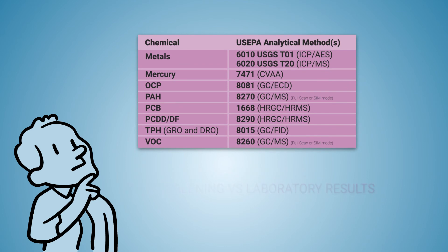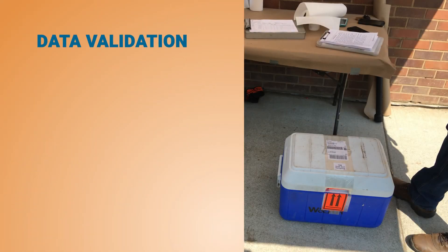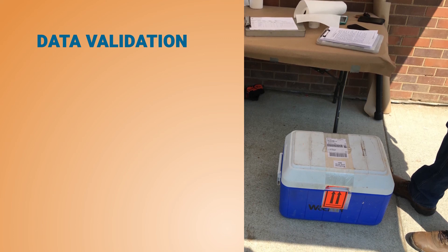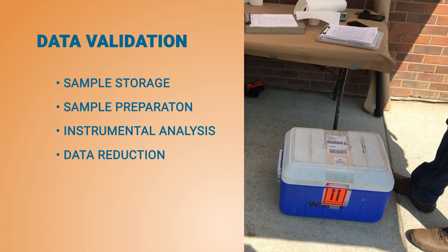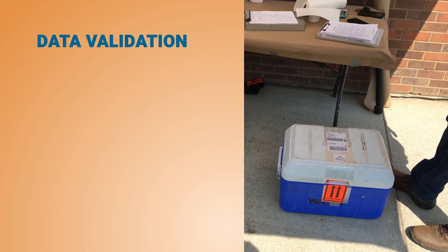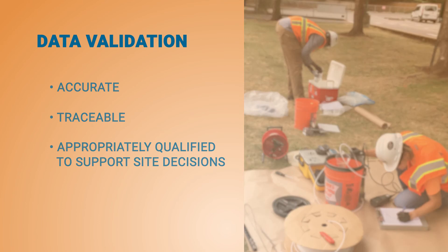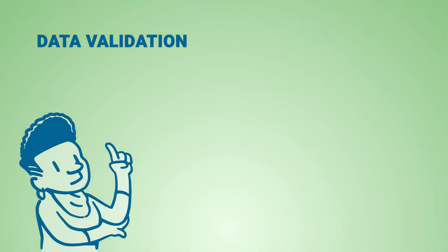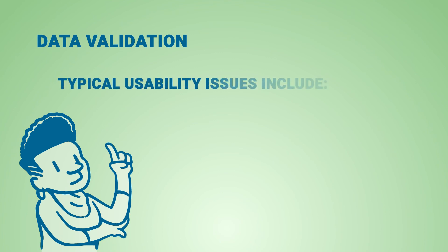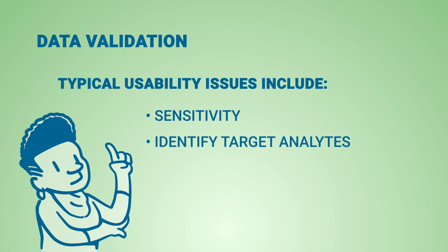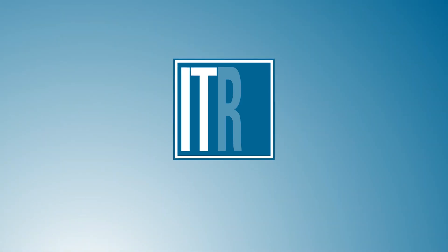Data validation is conducted to assess data quality and trace the history of the sample from collection through sample storage, sample preparation, instrumental analysis, and data reduction. Data validation ensures that the resulting data from the sample's analysis are accurate, traceable, and appropriately qualified to support site decisions. Ultimately, data validation provides an assessment as to whether and how usable the data are for site decision making. Typical usability issues include sensitivity, the ability of the analytical method to detect a target analyte at reporting limits low enough for the project, the ability to identify target analytes of concern in soil samples such as peak resolution, and poor recoveries and other quantitation reliability issues. For more information on analytical methods for soil background, see Section 10 of the ITRC Soil Background and Risk Assessment document at itrcweb.org.